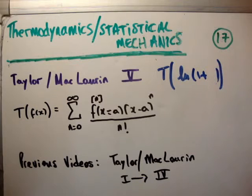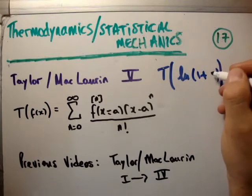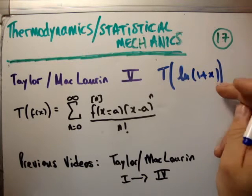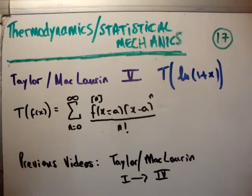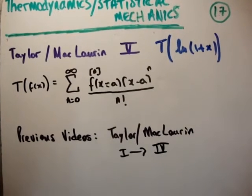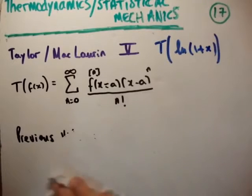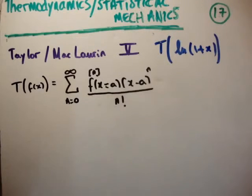Not 1 plus a as I've written here, 1 plus x. So, as we've seen already plenty of times, the Taylor series is written as follows. The previous videos, of course, are the four previous Taylor/McLaren series videos. In order to calculate the coefficient c sub n, we need to calculate the n derivatives of our expression.